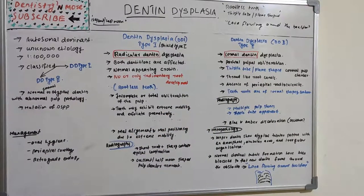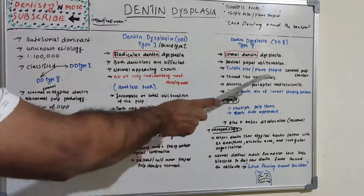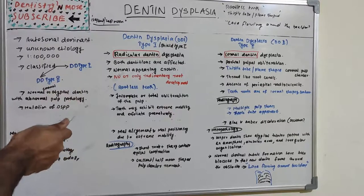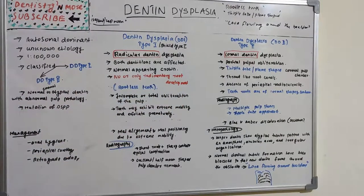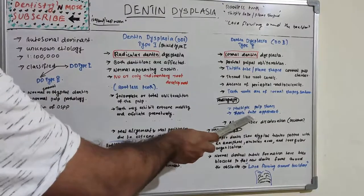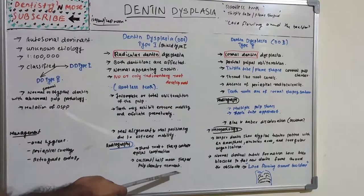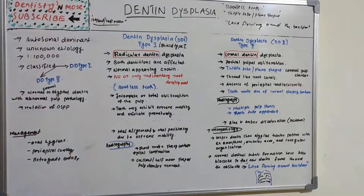In Type 2, thread-like root canals are another feature, with absence of periapical radiolucency and roots of normal shape and contour. In contrast, Type 1 has rudimentary roots. Radiologically in Type 2, multiple pulp stones are present, and a thistle tube or flame-shaped appearance is seen. Key comparison: thistle tube or flame shape is Type 2; rootless teeth and crescent or half-moon shaped pulp chamber are Type 1.